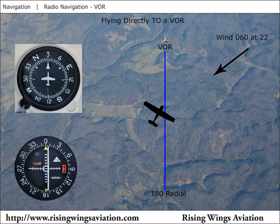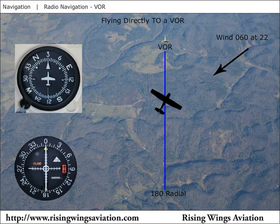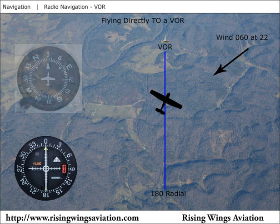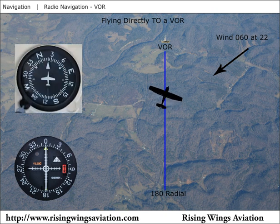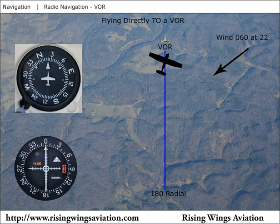Maintain our new heading until the CDI is centered. Once the needle is centered, we make a guess as to what heading will perfectly counteract the wind. We know that a 030 heading more than counteracts the wind, but a 15 heading fails to counteract the wind, so we should pick a heading between these two. We decide to try a 020 heading. After maintaining that 020 heading for a few minutes, the CDI needle is still centered. This process of determining the proper heading for wind correction is known as bracketing, since you progressively narrow the range of headings the desired wind correction heading lies within.